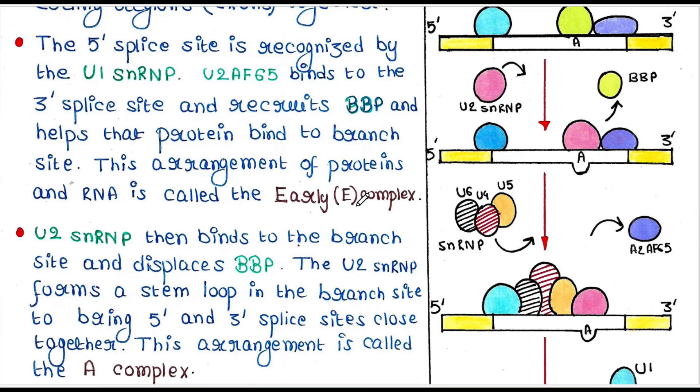Then what happens? U2 snRNP then binds to the branch site and displaces BBP. The U2 snRNP forms a stem loop in the branch site to bring the 5' and 3' splice sites close together. This arrangement is called the A complex.